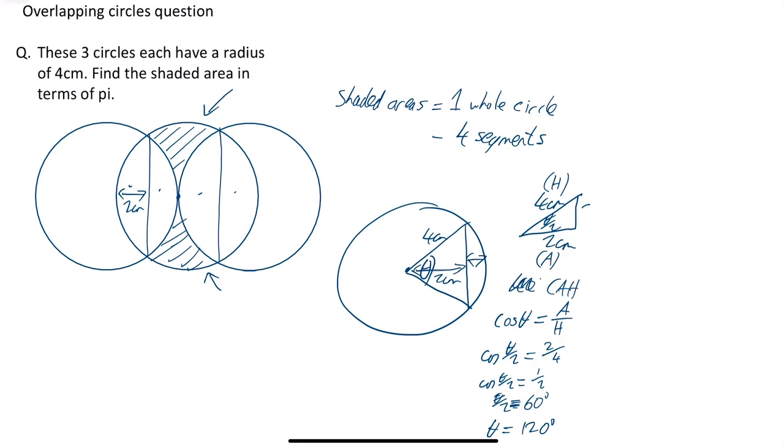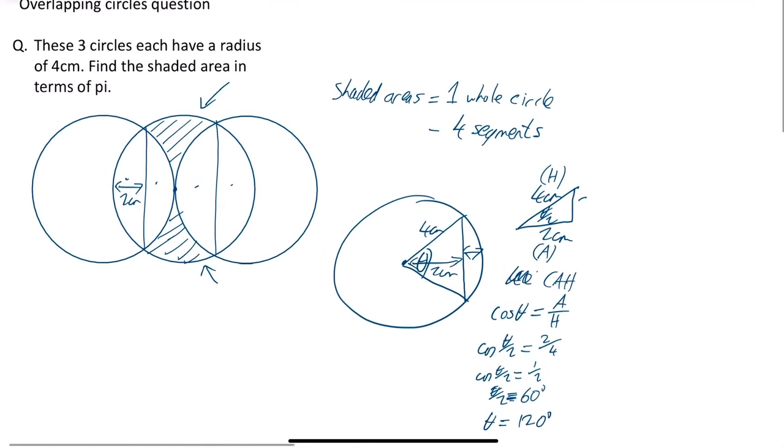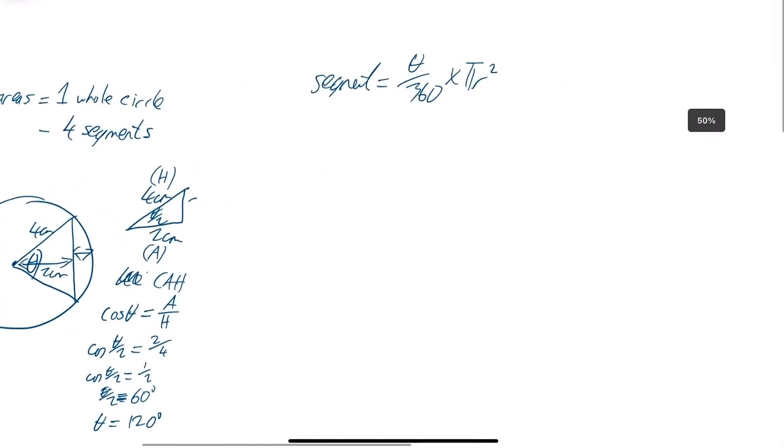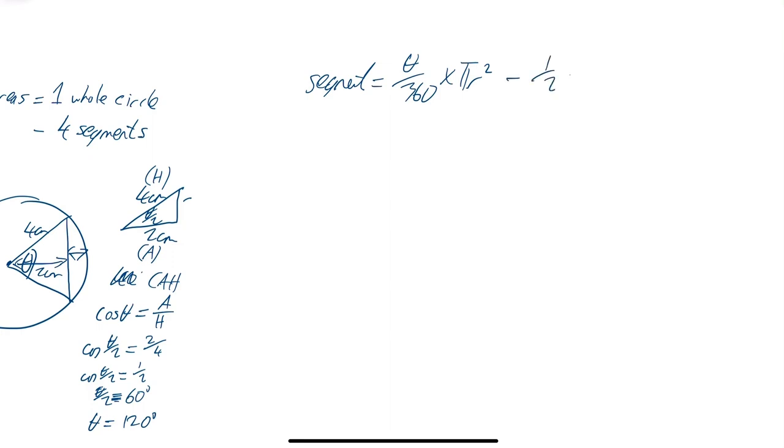So what we can do with that is work out the area of your sector. Your area of your segment, I should say. 1 segment is equal to theta over 360 times pi r squared, that's the area of the whole sector, minus the area of the triangle, which is 1/2 r squared sine theta. So if we put in all the values that we know, our theta is equal to 120 over 360 times pi times my radius which is 4 squared minus 1/2 times your radius which is 4 squared times sine of 120.